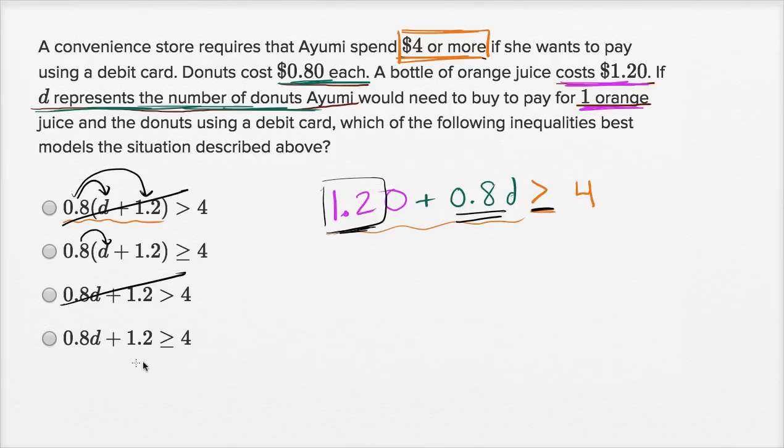And then lucky for us, this right over here is very similar. It's exactly what we wrote up here, with just the difference that instead of writing $1.20, they wrote 1.2. So if you just swap these two around, you get 0.8D plus 1.2 is greater than or equal to four. So this is exactly what we had over there, so I would definitely feel good about picking this one.